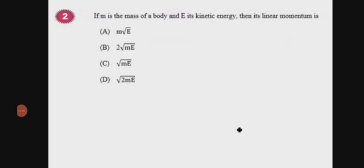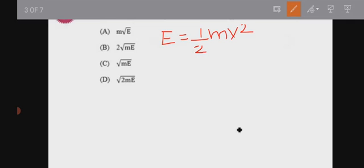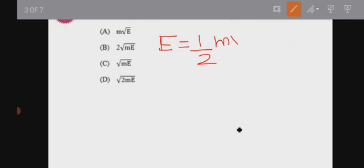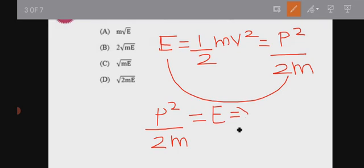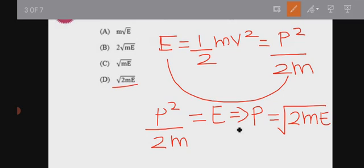Next question: if M is the mass of a body and E is its kinetic energy, find its linear momentum. Kinetic energy E equals half mv squared. Also, kinetic energy equals p squared divided by 2m. Therefore, momentum p equals the square root of 2mE. This is option D.